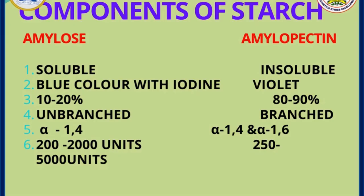Amylose and amylopectin are the two components of starch. Amylose is soluble in water and gives a blue color with iodine. It forms 10 to 20 percent of the total starch and is unbranched — linear in structure — formed of only alpha-1,4 linkages. Amylopectin is insoluble in water and forms a violet color with iodine. It forms the major component of starch, nearly 80 to 90 percent, and is a branched structure formed of alpha-1,4 and 1,6 linkages. The mixing of the blue and violet color gives the deep intense color seen in the iodine test.